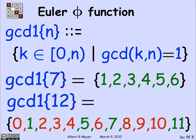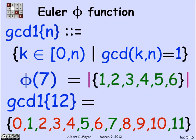GCD1 of 12 is the numbers that have no factor in common with 12. They're the numbers in green below, and the other red numbers do have a prime in common with 12. The pattern here is not so apparent. Anyway, phi of 7 is the size of GCD1 of 7, namely the size of the set 1 through 6, which is 6.